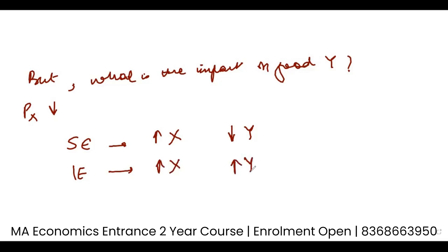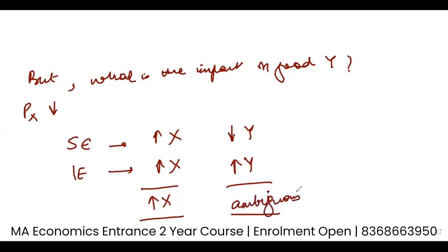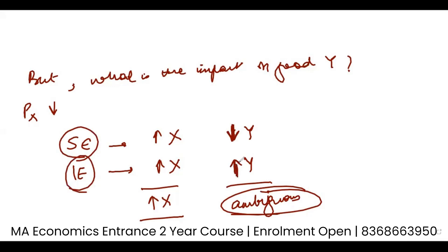Now comes the important part. For good X, both effects ask me to increase consumption, so I will increase consumption of good X. But for good Y, the situation is ambiguous. One effect tells me to decrease consumption of good Y, and the other tells me to increase consumption of good Y. So I am not sure what should be done with good Y, and because of this ambiguity, I make scenarios out of it.